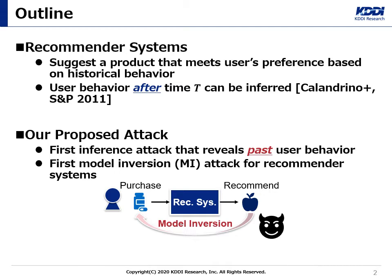The current state-of-the-art inference attack on user behavior such as ratings and purchases for recommendation systems is by Kalandrin et al. This shows if an adversary obtains a moderate amount of public user behavior before some time t, she can infer private user behavior after time t. However, the attack that infers private user behavior before time t remains open. Therefore, we propose the first inference attack that reveals past private user behavior. Specifically, we propose the first model inversion attack against recommendation systems, which allows an adversary to infer a user's past private behavior by observing items recommended to the user.